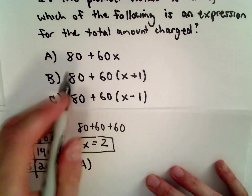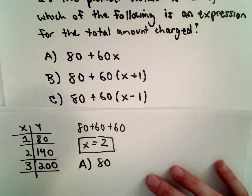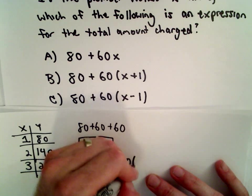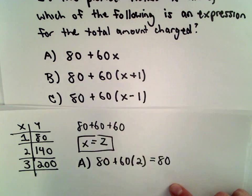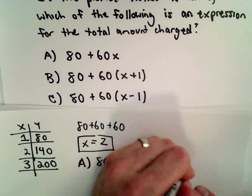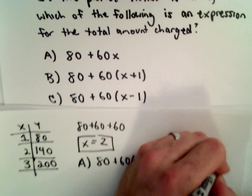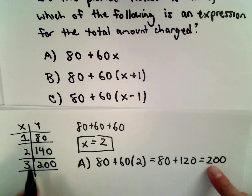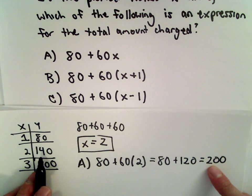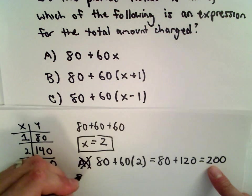So, does A work? Well, we would have 80 plus 60 multiplied by 2. That's going to be 80 plus 60 multiplied by 2 is 120, or we're getting that he's charging $200, but that's not correct. We said for two hours it should be 140. So A is not correct.